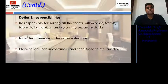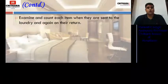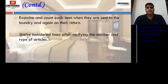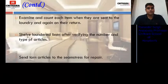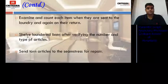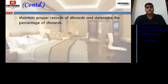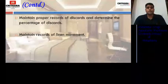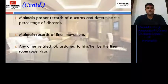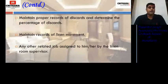He places soiled linen in containers and sends them to the laundry. He examines and counts each item when sent to the laundry and again on their return. He shelves laundered linen after verifying the number and type of articles, sends torn articles to the seamstress for repair, and maintains proper records of discards to determine the percentage of discards. These records are checked and verified for procurement of new items. He also maintains records of linen movement and performs any other related job assigned by seniors.